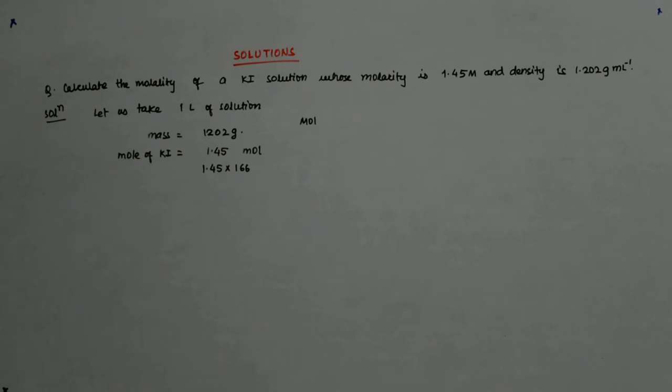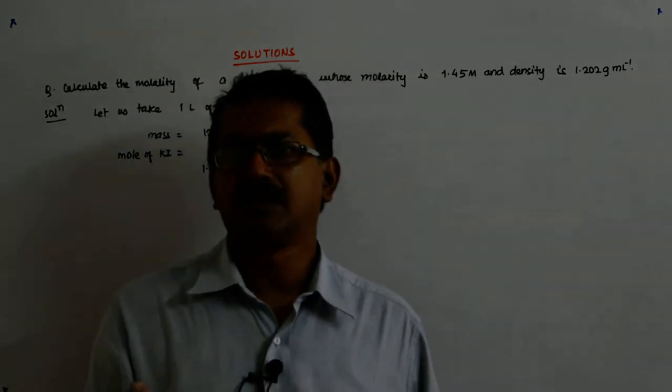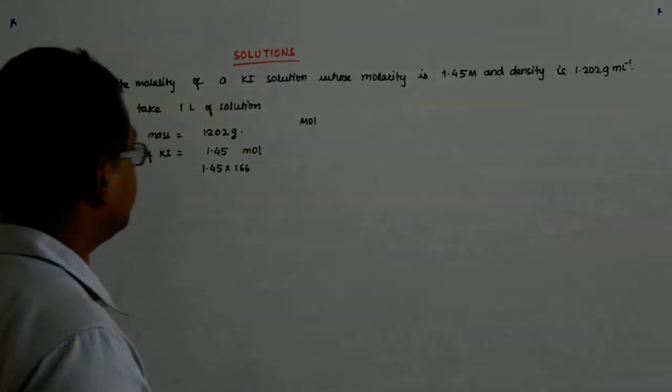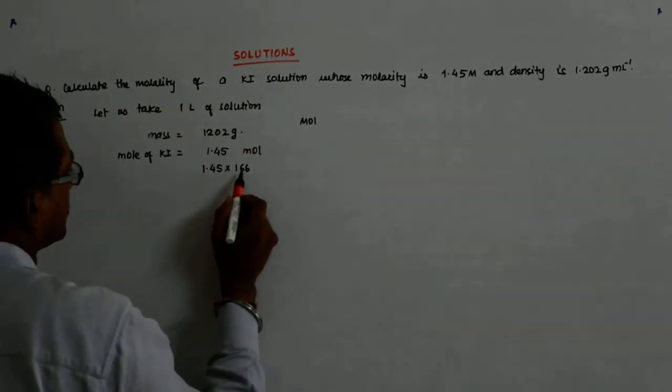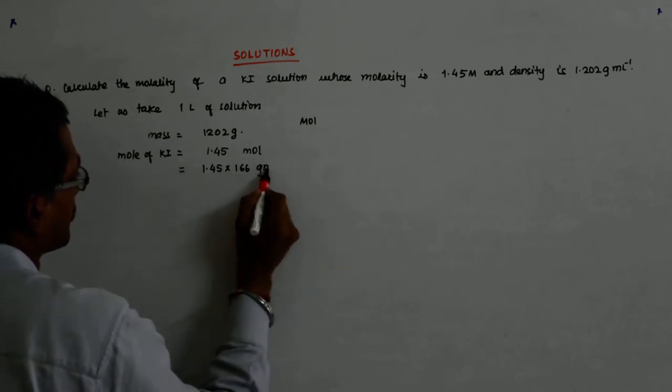How will it be 1.202 grams per liter? I have picked up 1 liter. So the density is 1.202 gram per liter. So if I pick up 1 liter, it will be total, so this is equal to so many grams.